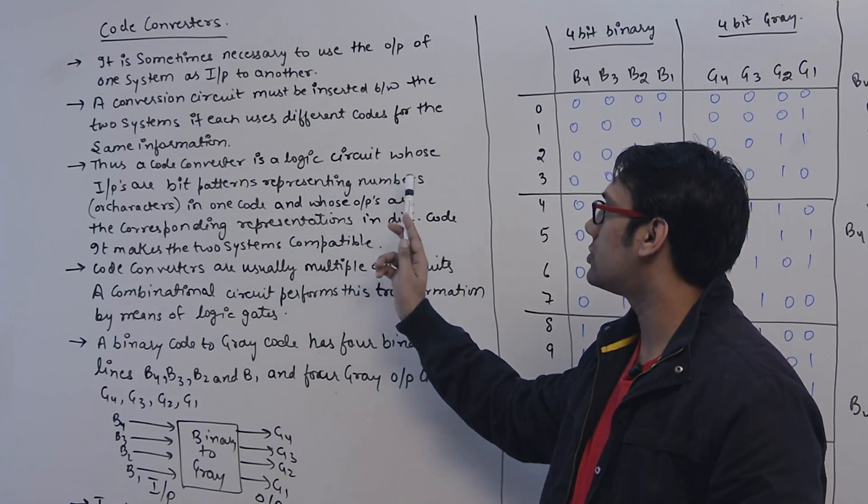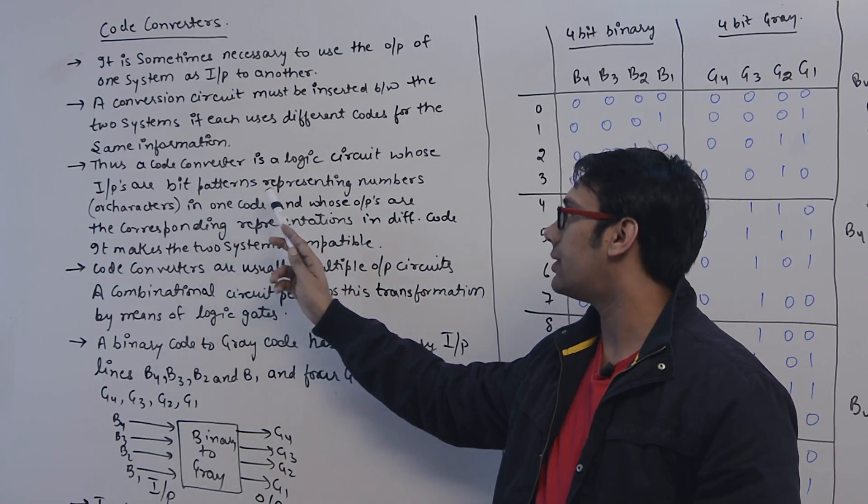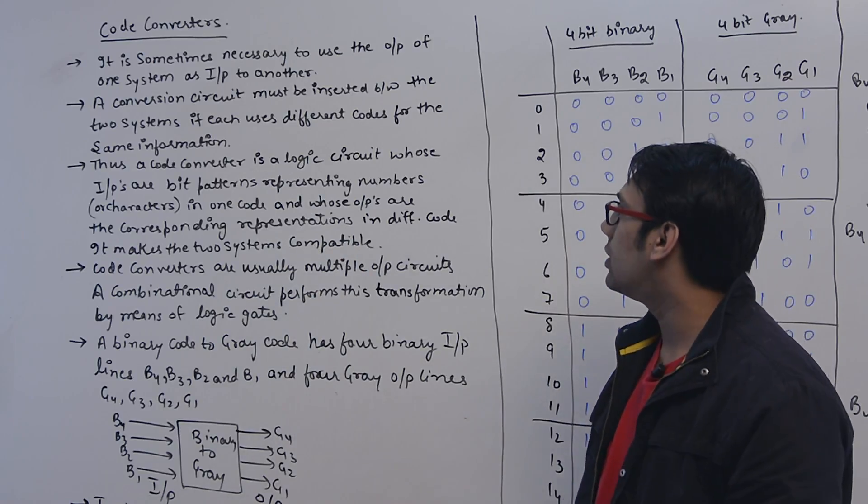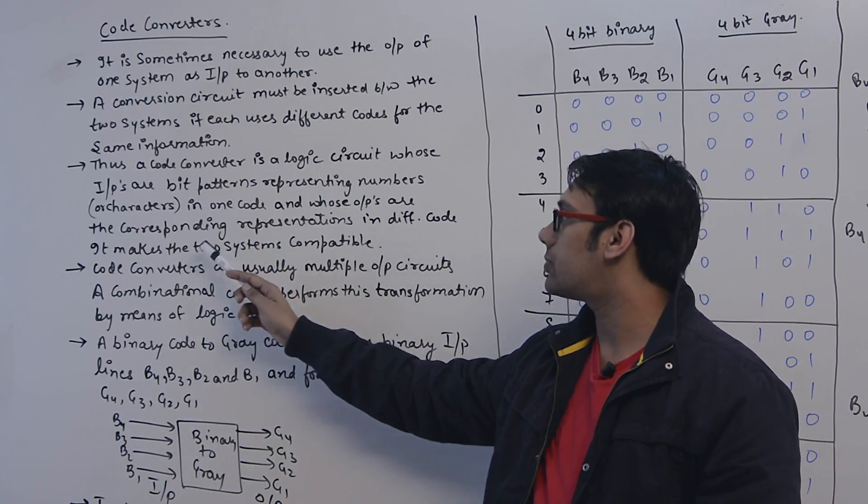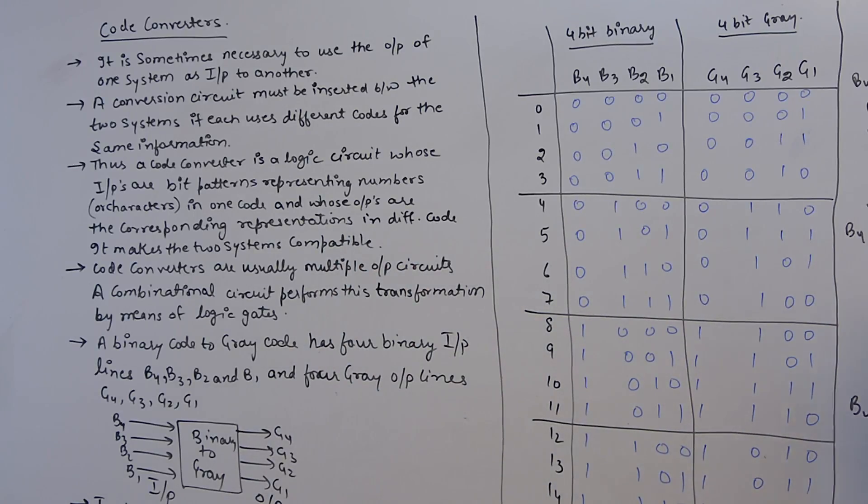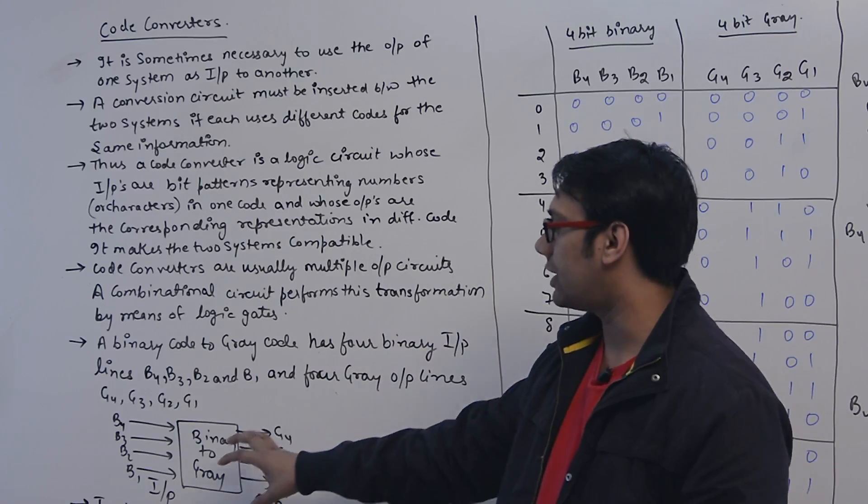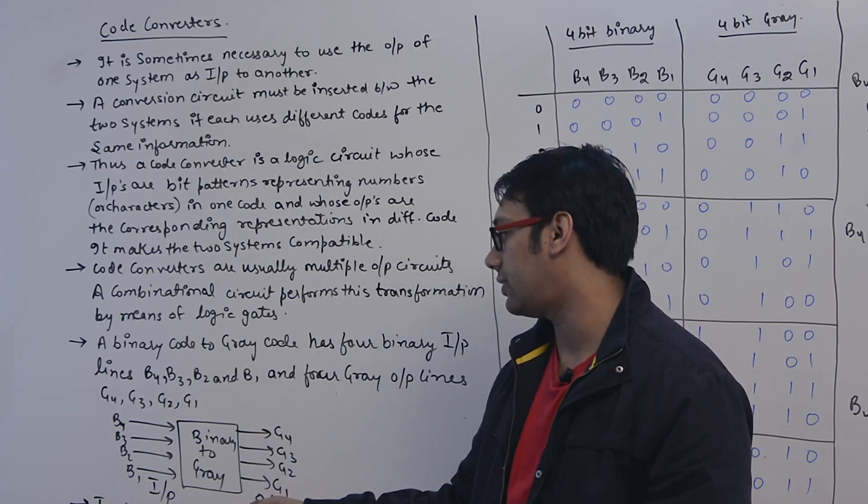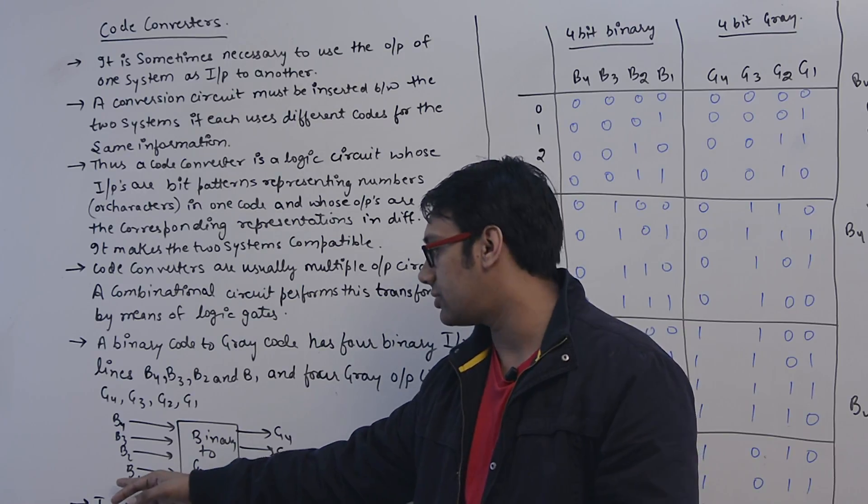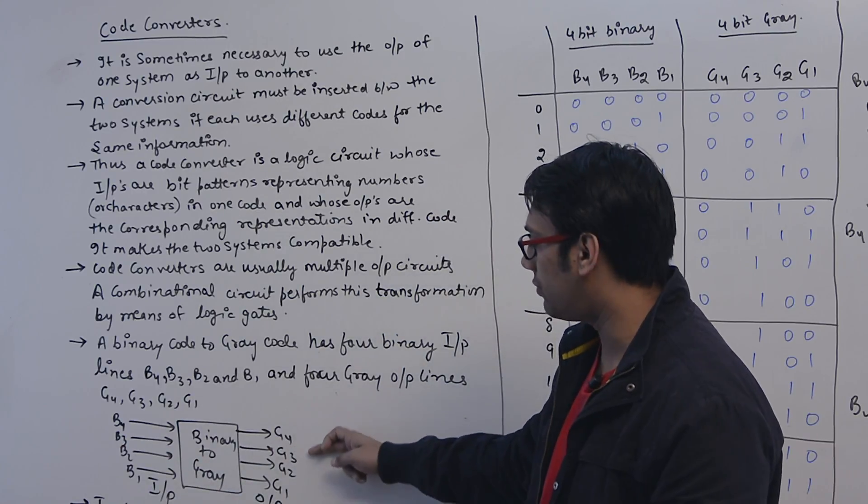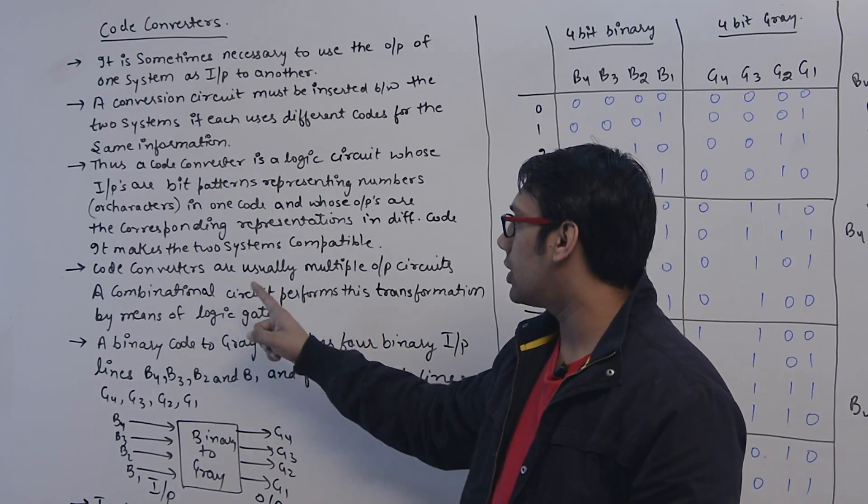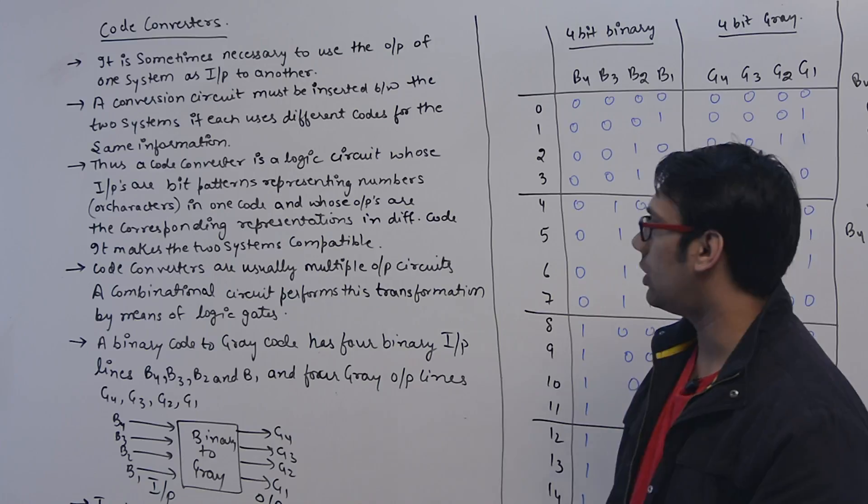A conversion circuit must be inserted between the two systems if each use different codes for same information. Thus, a code converter is a logical circuit whose inputs are bit patterns representing numbers or characters in one system, and whose outputs are the corresponding representation in different code. It makes the two systems compatible.